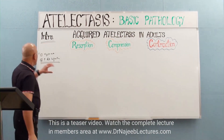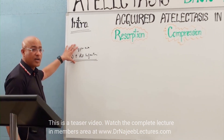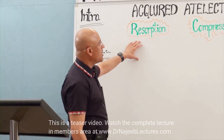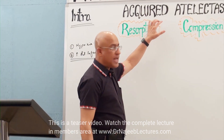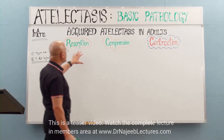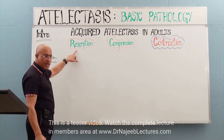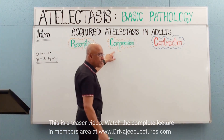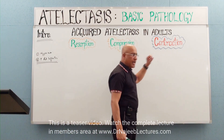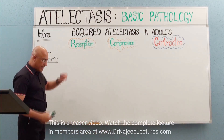Due to these complications, wherever possible atelectasis should be reversed promptly. Now, why does atelectasis occur? In this lecture I will discuss acquired atelectasis in adults, which is classically divided into three major categories: resorption atelectasis, compression atelectasis, and contraction atelectasis.